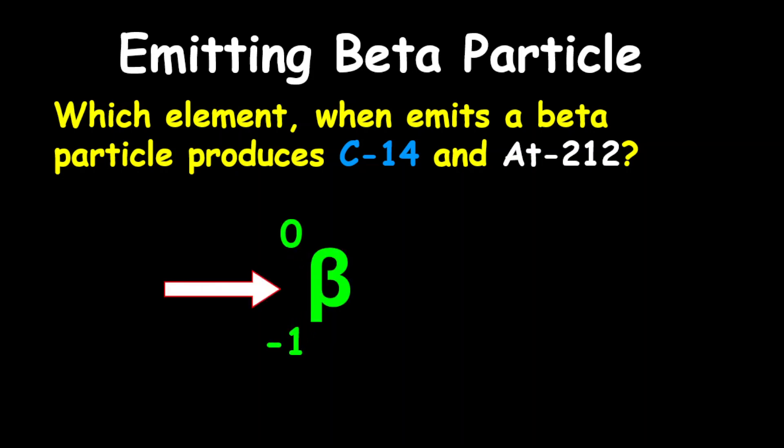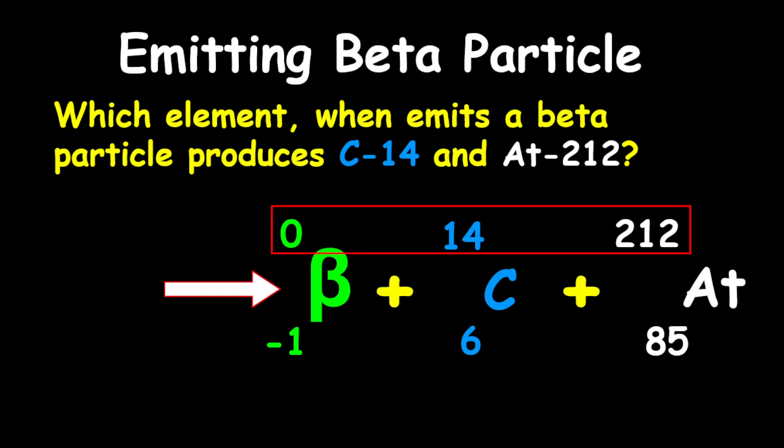...our carbon-14 with a proton number of 6, our astatine with a proton number of 85, to determine the element that was broken down. What you're going to do here is to add all the masses on the product side. So therefore, 0 plus 14 plus 212 gives us 226.